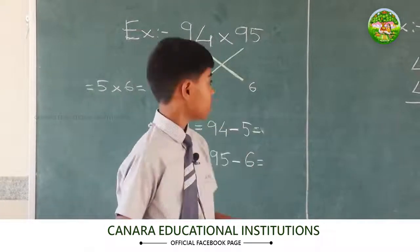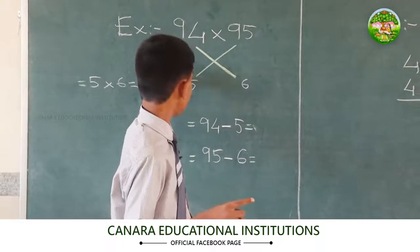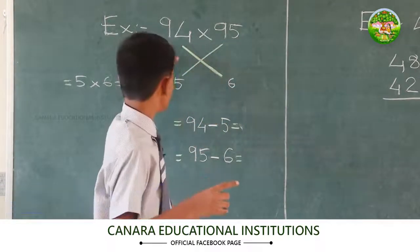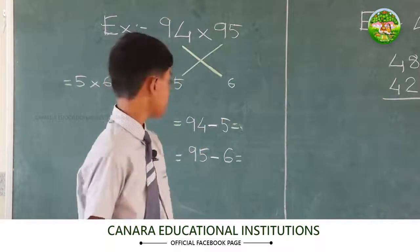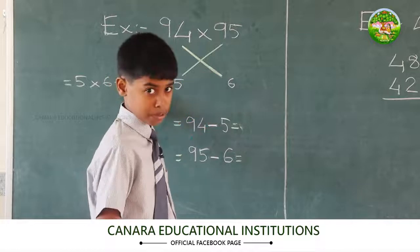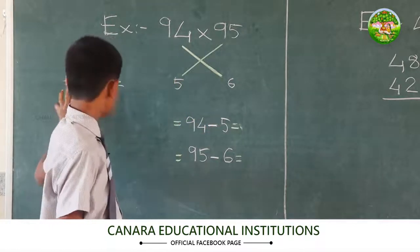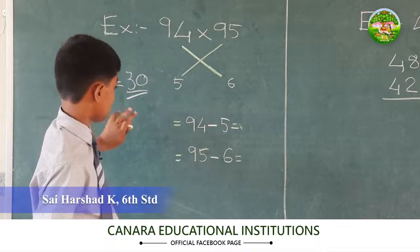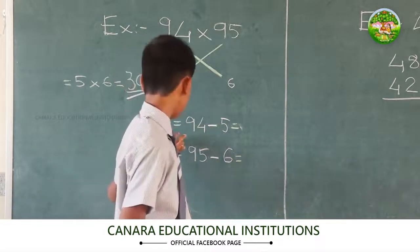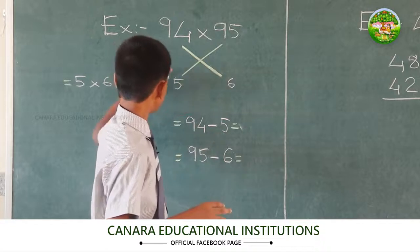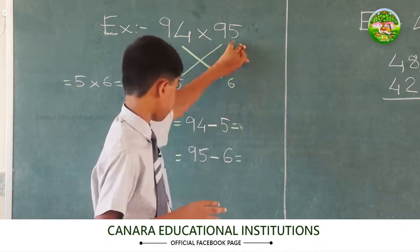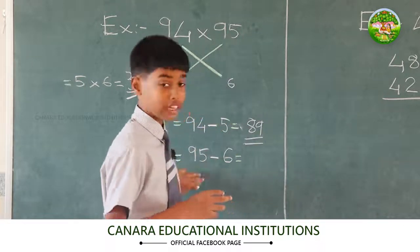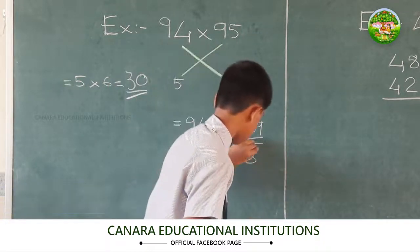In the first step, we have to find the difference between 100 and these two numbers: for 95 it is 5 and for 94 it is 6. In the second step, we multiply these two differences, which is 5 × 6 = 30. We keep this number 30 aside.